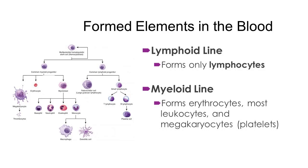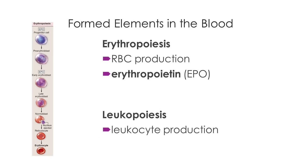Hematopoiesis refers to blood formed element development overall. More specifically, erythropoiesis speaks to just red blood cells — and that's where we get erythropoietin, which we already introduced as one of our important hormones. Leukopoiesis refers to leukocyte, or white blood cell, production.